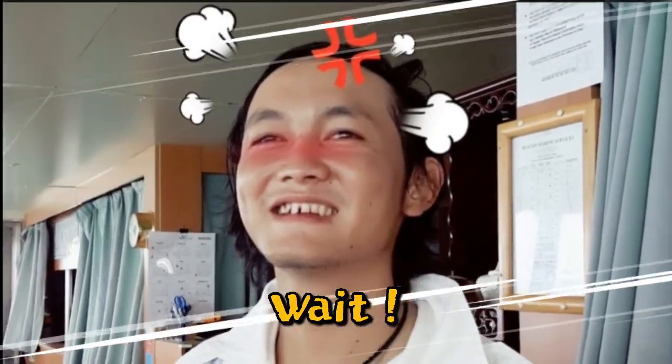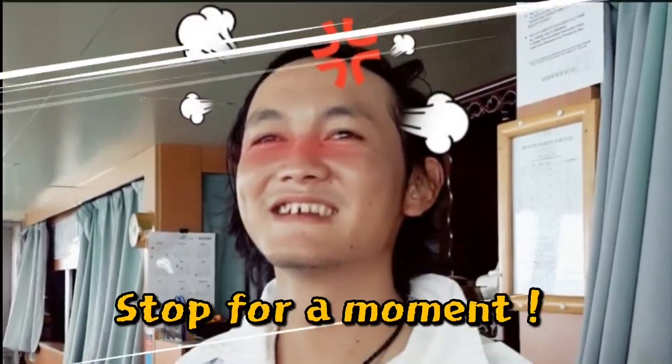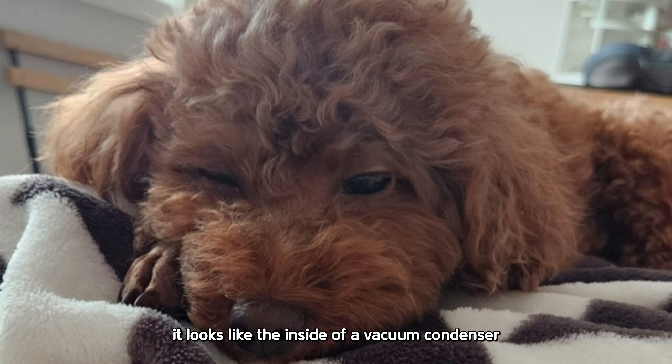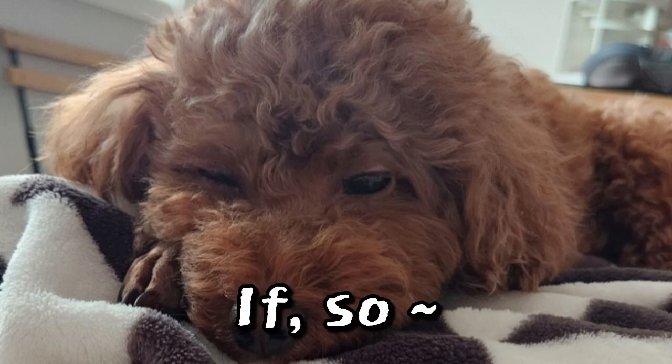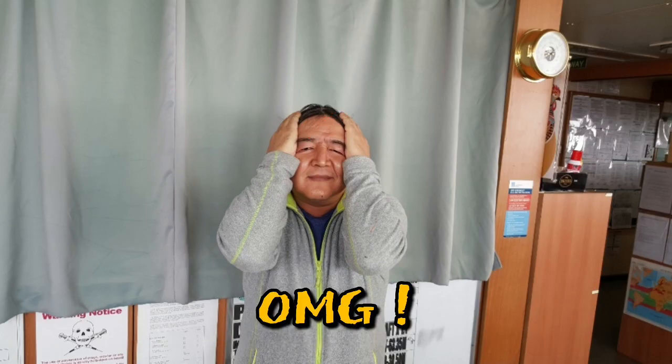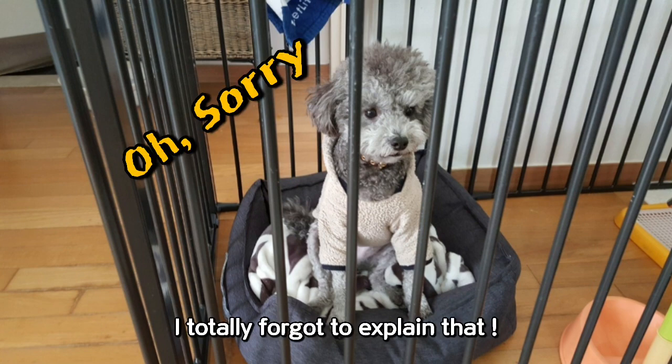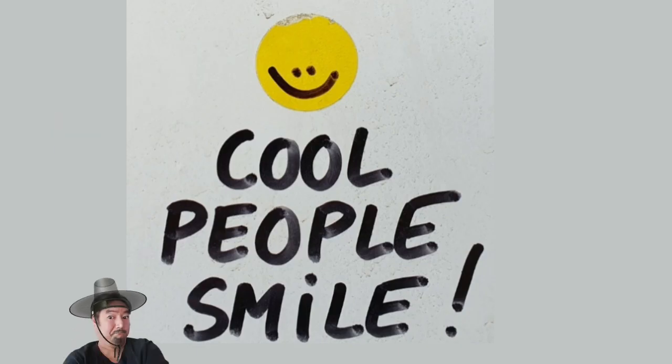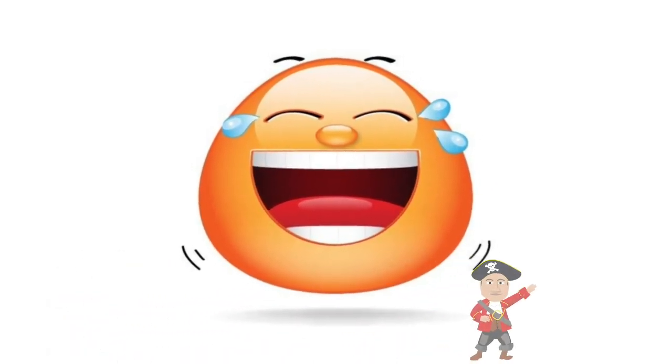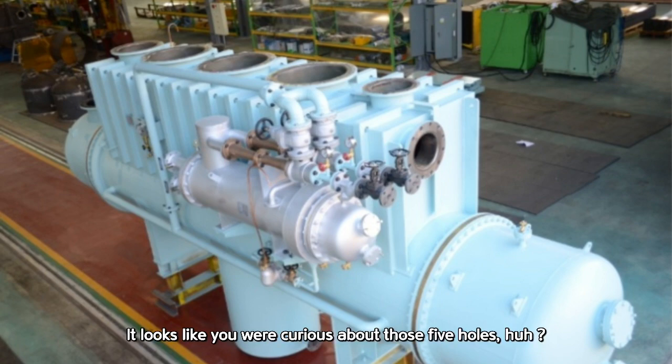Wait, hold on, stop for a moment! That last photo we just passed, the one with the five big holes, it looks like the inside of a vacuum condenser, doesn't it? What are those five holes for? Did you forget to explain them? If so, would you mind explaining what those five holes are for? Oh sorry, I totally forgot to explain! It looks like you were curious about those five holes, huh? That's a great question.